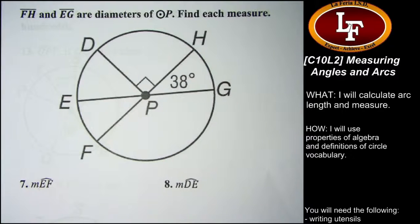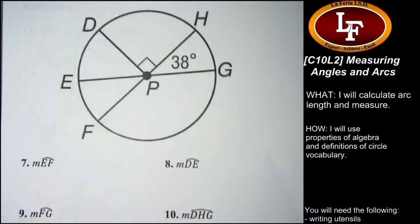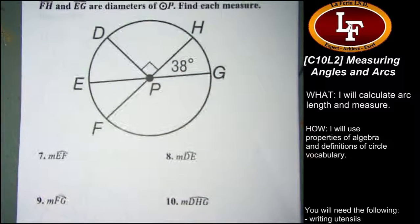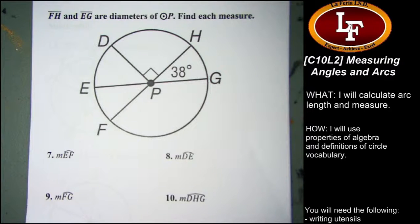In this section, you're given circle P with diameters FH and ED, and you're being asked to find each measure of arcs. Same sort of process in a different format, with a lot more angles that you have to deal with.